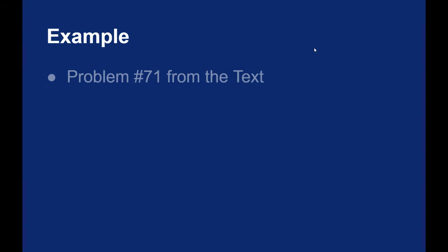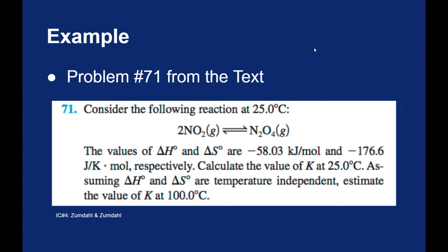Let's take an example from the text — problem number 71 from the back of the chapter. This is an equilibrium we've looked at before: nitrogen dioxide gas coming to equilibrium with dinitrogen tetroxide gas. You're given the values of ΔH and ΔS under standard conditions, and at 25 degrees Celsius you're asked to calculate the equilibrium constant.